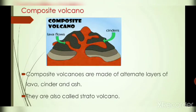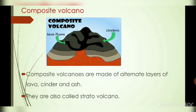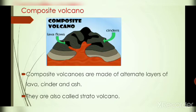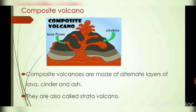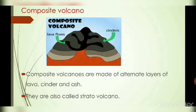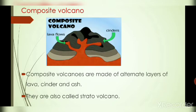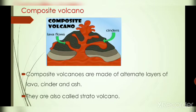Next is composite volcano. Composite volcanoes are made of alternative layers of lava, cinder, and ash. This composite volcano is also called a stratovolcano, because 'strato' means layer, and this volcano forms many alternating layers of lava, cinder, and ash. Shield volcano contains low silica, cinder cone volcano contains rich silica, and composite volcano contains alternate layers of lava.